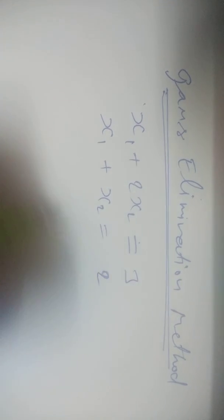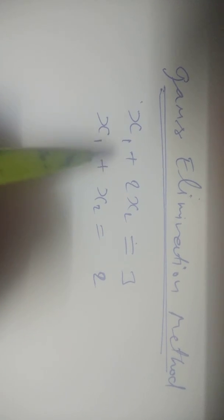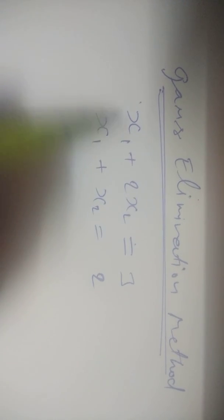Today we are discussing the topic of Gauss elimination method. In this method we discuss how to calculate the variables. Let us assume some equations: x1 plus 2x2 is equal to 3, and x1 plus x2 is equal to 2. We use these to calculate the variables x1 and x2 using the two equations.